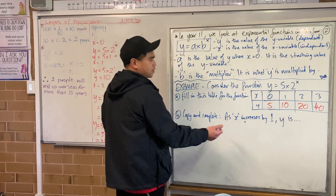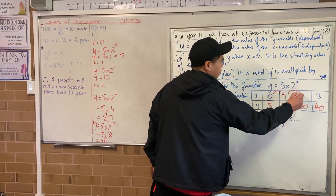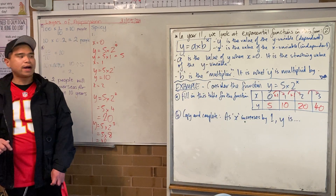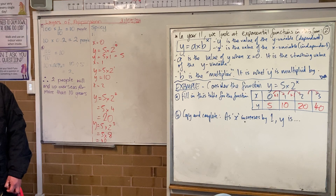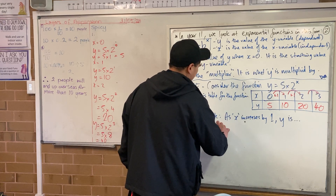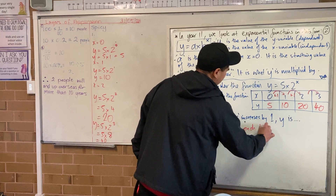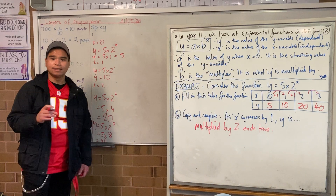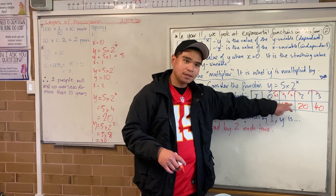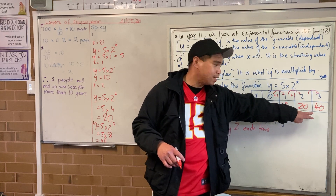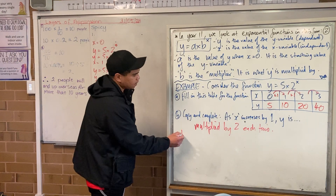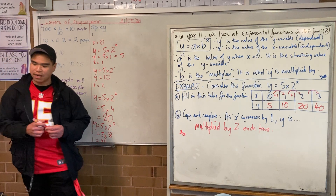As x increases by 1 each time, what can we say is happening to y? Is y increasing by the same amount each time? No. Is it being multiplied? Yes. y is multiplied by 2 each time. That is the main difference between linear and exponential. When it was linear, this would always go up by the same number. But here it went up by 5, then 10, then 20 — it's being multiplied by the same thing each time. Can you get that example down, please, and work on question 13b? It won't take you very long.